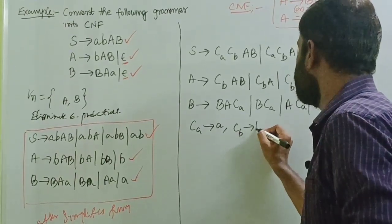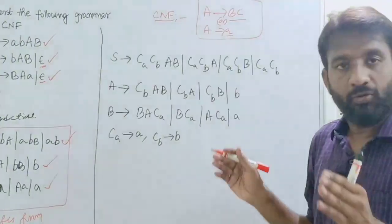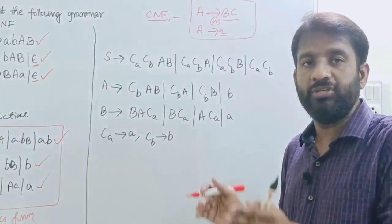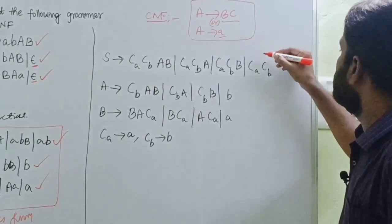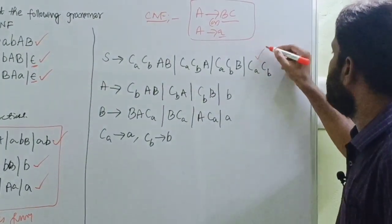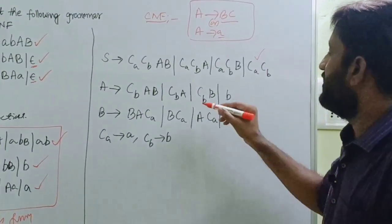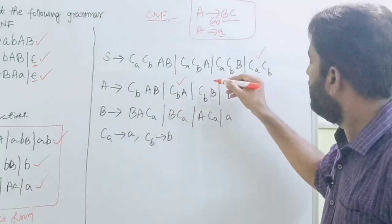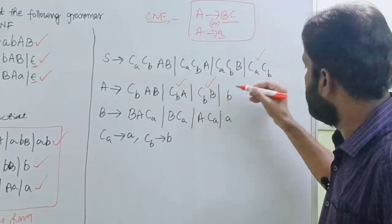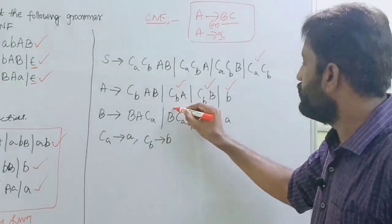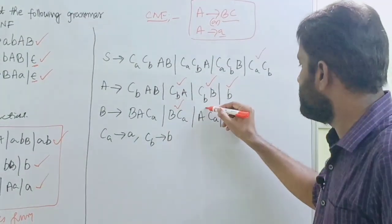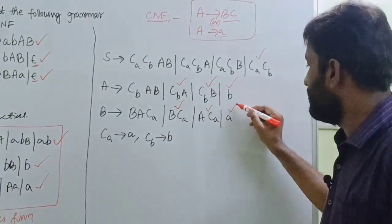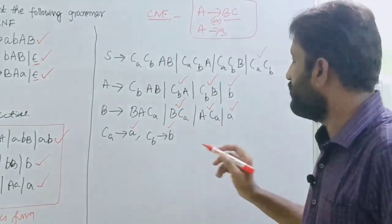Identify which productions are already converted into Chomsky Normal Form. CA and CB are converted. Productions with exactly two non-terminals or a single terminal are already in CNF — single terminal, two non-terminals, single terminal, two non-terminals, single terminal, single terminal.